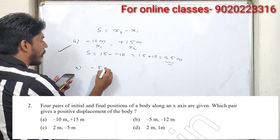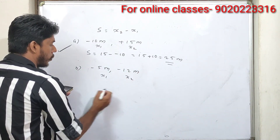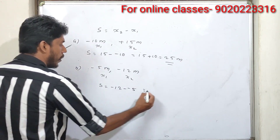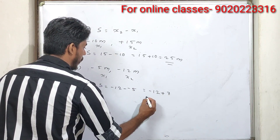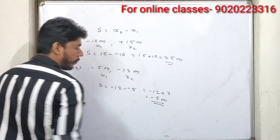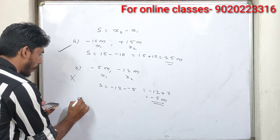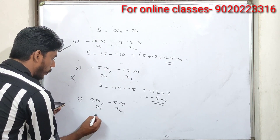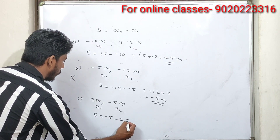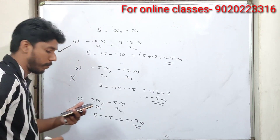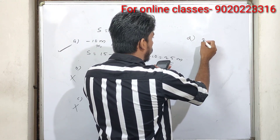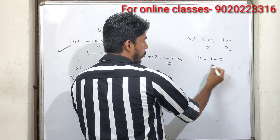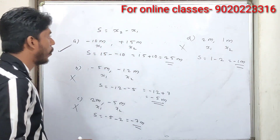For the other pairs: x2 minus x1 gives a negative result. For example, minus 5 minus 2 equals minus 7 meters — negative displacement. For another pair: x1 is 2 meters, x2 is 1 meter, so x2 minus x1 equals 1 minus 2 equals minus 1 meter — also negative. The answer is option A.